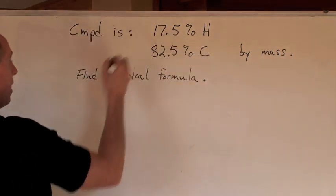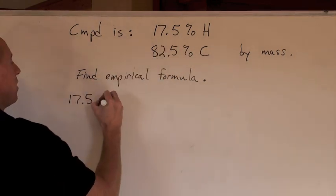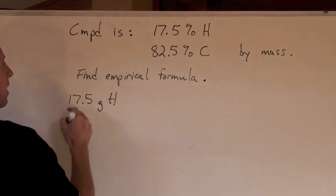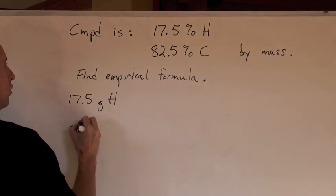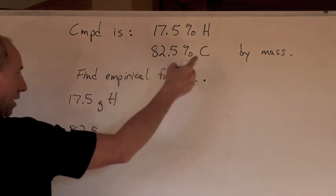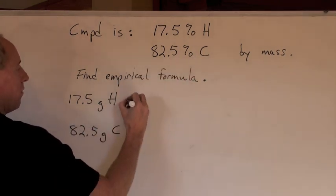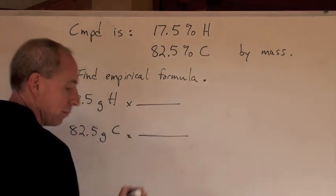Quite simply, it's this. If you see 17.5% hydrogen, that means that's how many grams you have of that. And if you see 82.5% carbon, that's how many grams you have of that.